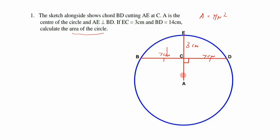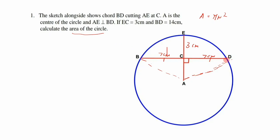To calculate the radius, we construct radii joining A to D and A to B. So AB, AD, and AE are all radii. We pick triangle ADC to work with, since this side is a radius and this side is also a radius.